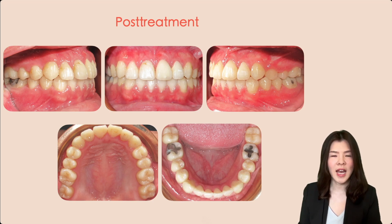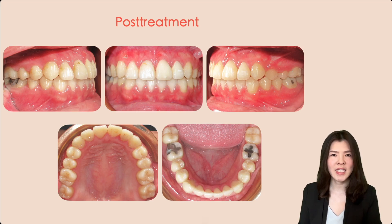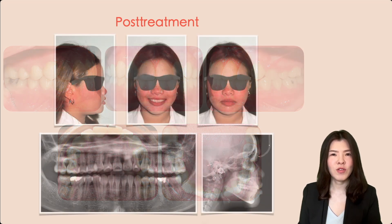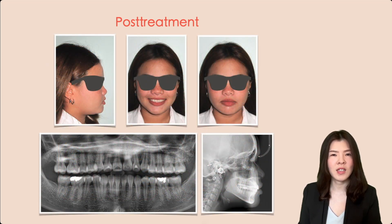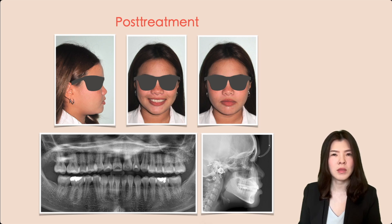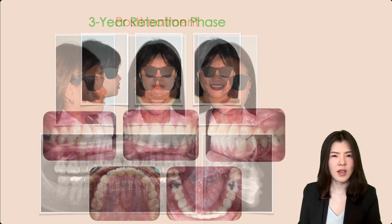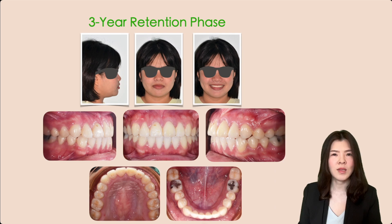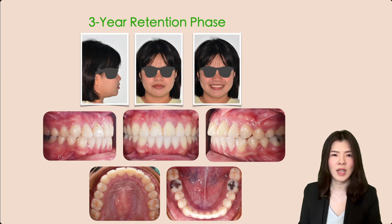Crossbite of anterior and left posterior teeth were eliminated. Class 1 molar relationship with ideal overjet and overbite were obtained. Facial photographs show improvement in the soft tissue profile, and the patient's smile turned into a normal smile line.